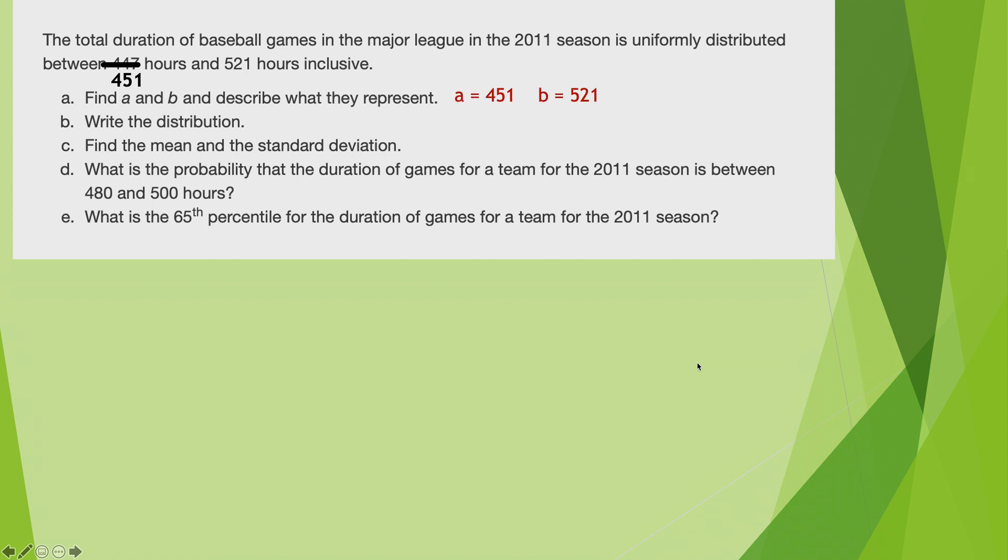Okay, so A is 451 and B is 521 because the lowest hours is 451, the highest is 521. That's how you find A and B. Write the distribution. So that's the notation that says X tilde U for uniform distribution from 451 to 521. So that's standard operating procedure there.